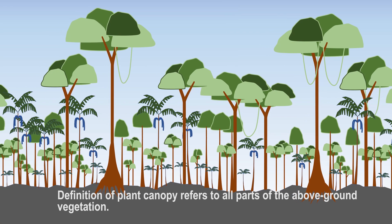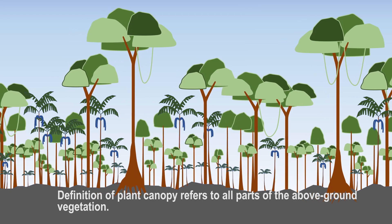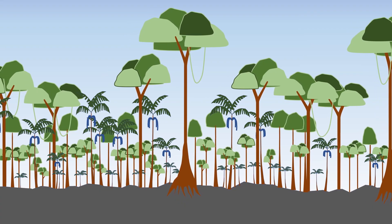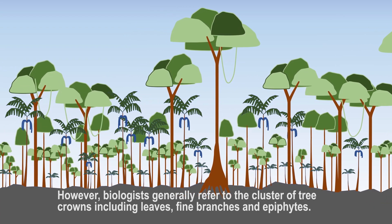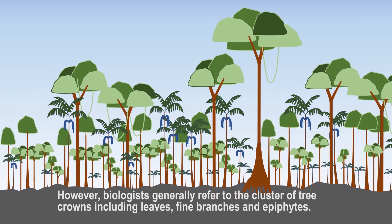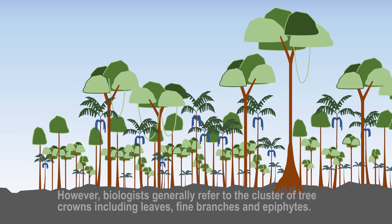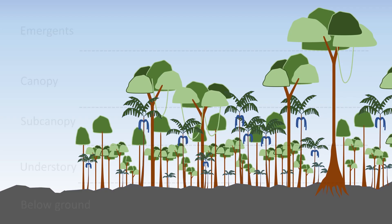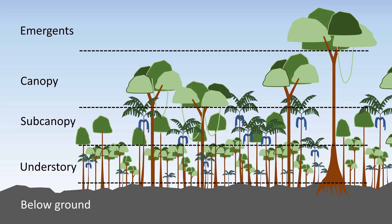The definition of plant canopy refers to all parts of the above ground vegetation. However, biologists generally refer to the cluster of tree crowns including leaves, fine branches, and epiphytes. Ecologists frequently use terms such as canopy, sub-canopy, and understory to describe plants forming vertical layers of a forest, though this is a rather arbitrary nomenclature with no clear distinction, especially for what constitutes a sub-canopy tree.